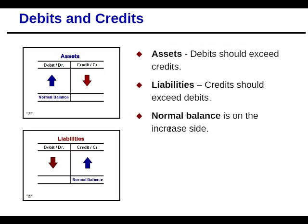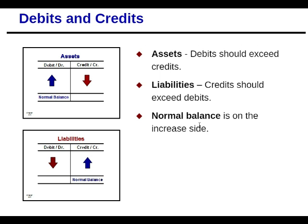Assets and liabilities: assets increase on the debit side, decrease on the credit side. Liabilities decrease on the debit side, increase on the credit side. There is a normal balance for each one of these elements, and accounts follow the umbrella of the elements, for the most part. So if it's an asset, the normal balance should be on the debit side. If it's not, something may be off. Liabilities' normal balance is on the credit side — they like the credit side.